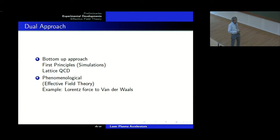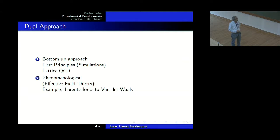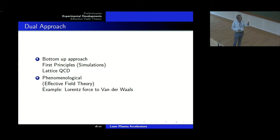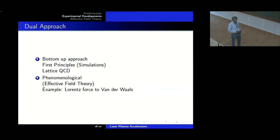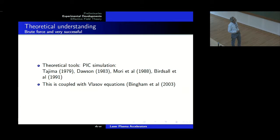Lattice QCD is as good or as bad as doing an experiment — it only confirms that QCD is correct. It may not necessarily tell me what exactly is happening, which is the reason why we do effective field theory. Nobody employs the Lorentz force or Coulomb interaction to understand the interaction between two molecules — we employ Van der Waals interactions. The effective theory gives us a picture: you know what the effective potential is, what the depth is, what the range is, and you can quickly estimate how many bound states there are. You may sacrifice a little precision, but you gain insight.